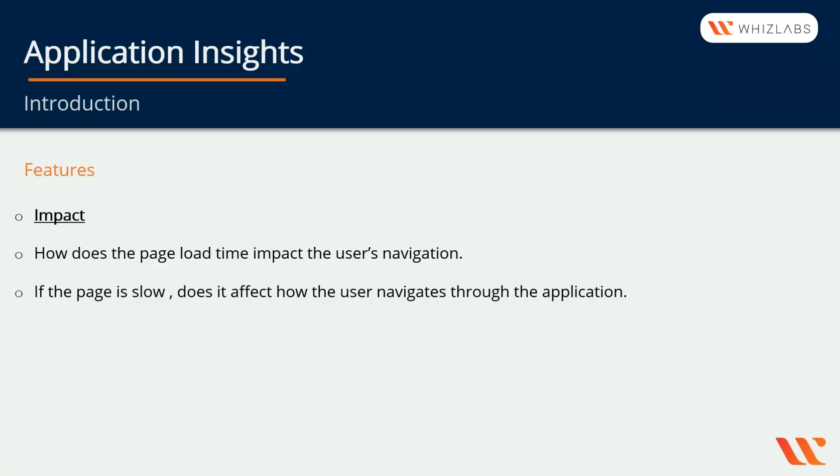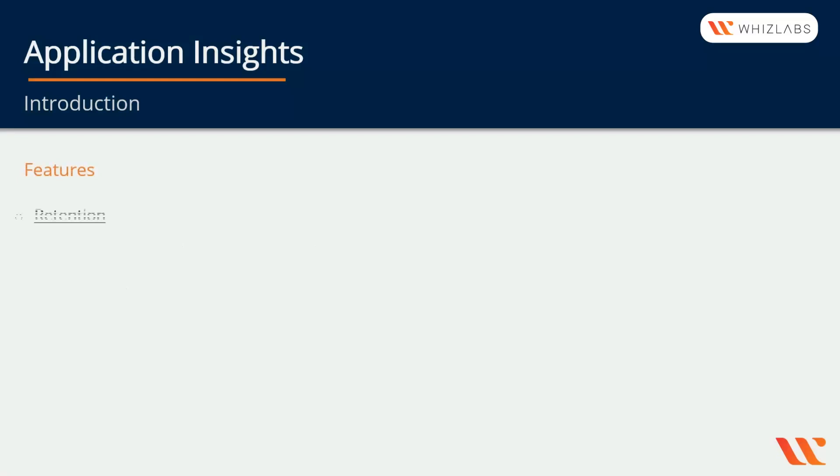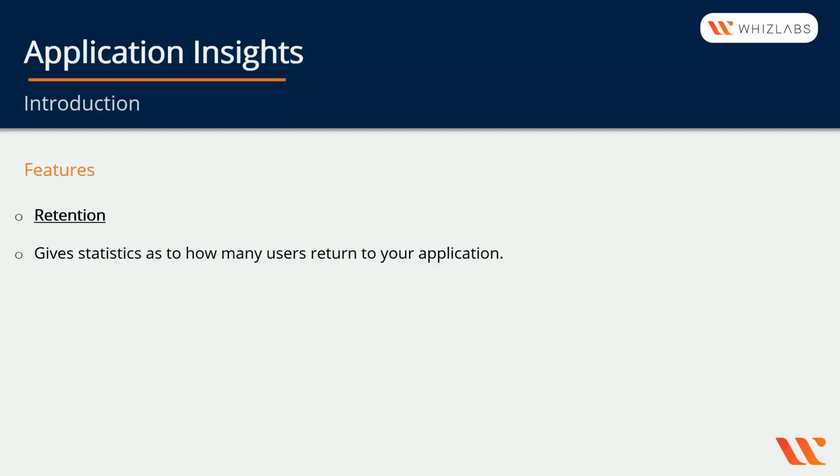Next you have Retention, which gives statistics on how many users return to your application and whether users come back after completing a task. Those are the four important features — Funnels, User Flows, Impact, and Retention — which you should know from an exam perspective.